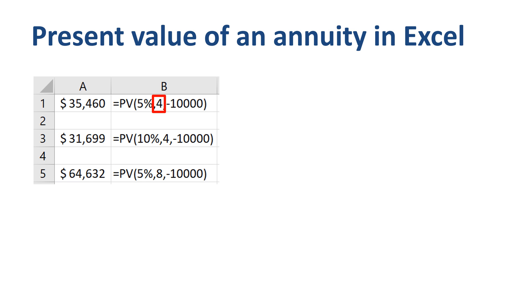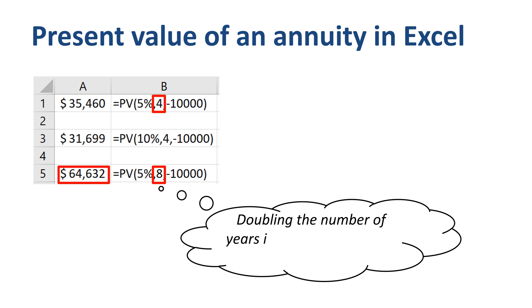If you would like to increase the number of periods from 4 to 8, then the present value of the annuity increases to $64,632. A doubling of the number of periods leads to an increase in the present value of the annuity of 82%.